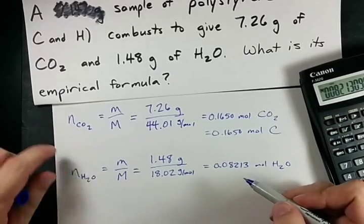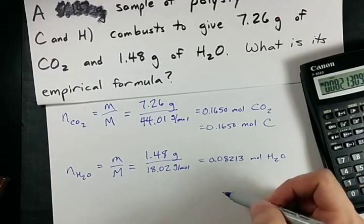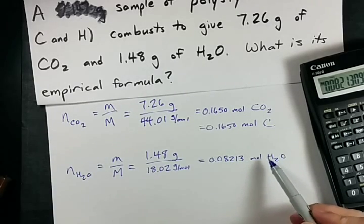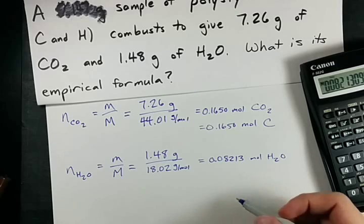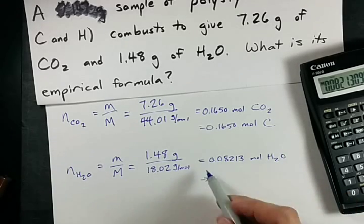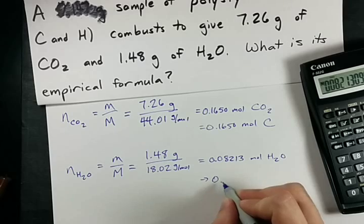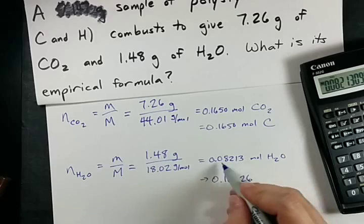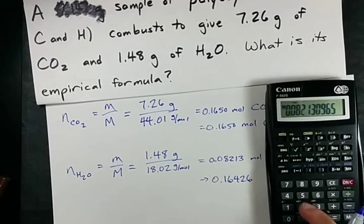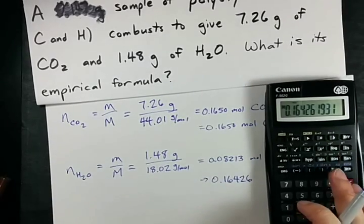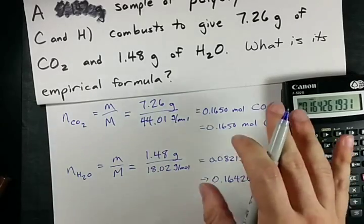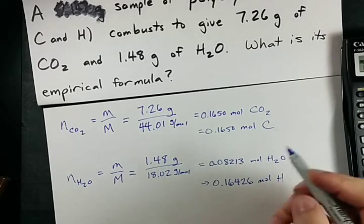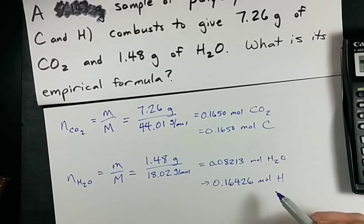1.48 divided by 18.02 is 0.08213 moles of water. Now, here comes the trickiest bit in my experience of teaching people how to do this. Because each water molecule has two hydrogens, the number of hydrogens in this sample is double this amount. 0.16426.